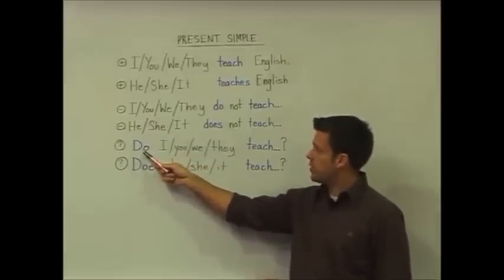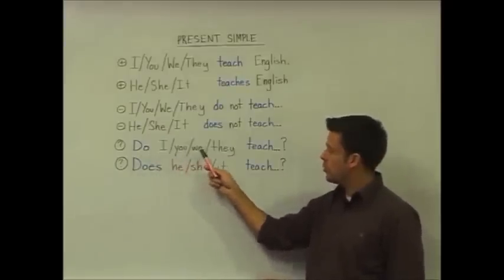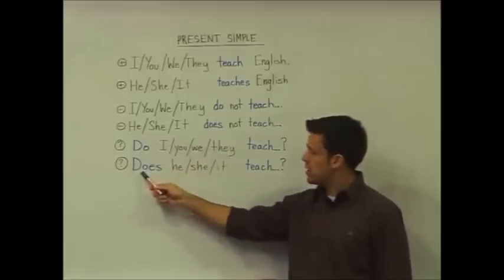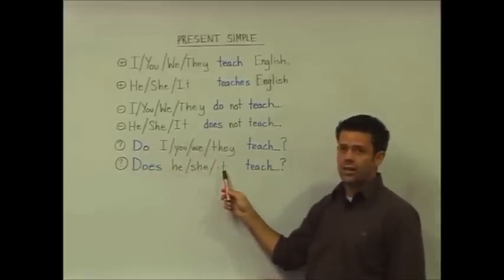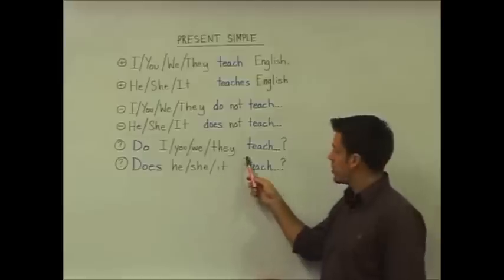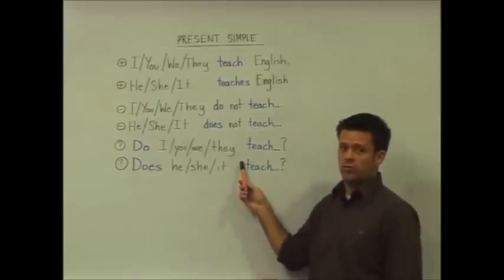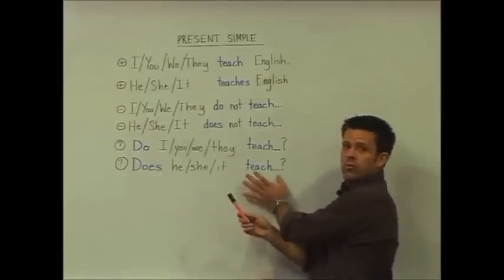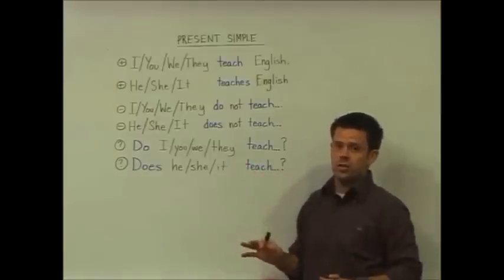Of course, again, we use 'do' for I, you, we, and they, and use 'does' for he, she, and it. In both cases, we've left our verb form as the base form of the verb, as there's no need to change it.